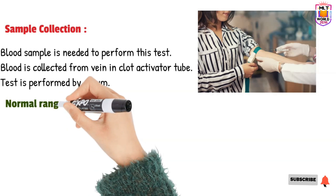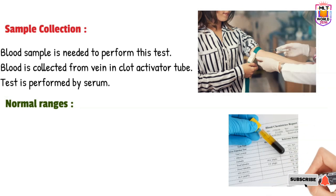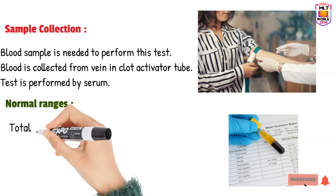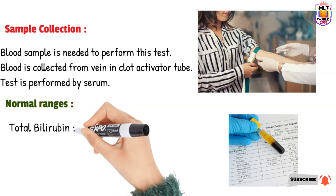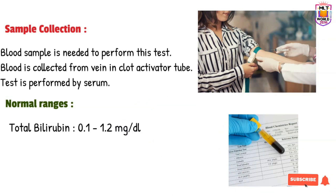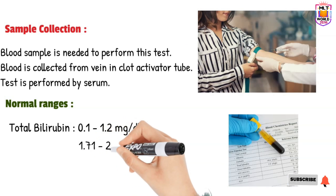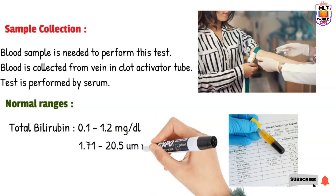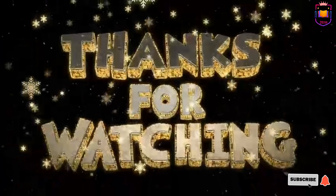The normal range of bilirubin in adults is 0.1 to 1.2 milligrams per dL. If the result is more than 1.2 mg/dL, it means the patient has high bilirubin. In micromoles, the normal range is 1.71 to 20.5 micromoles per liter.